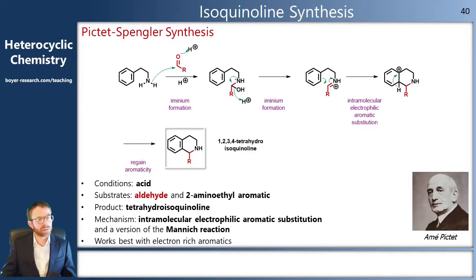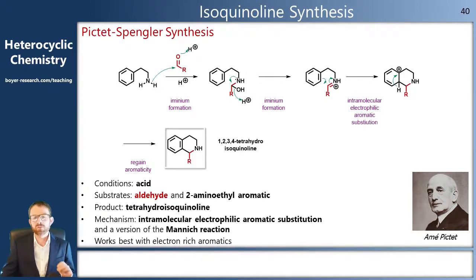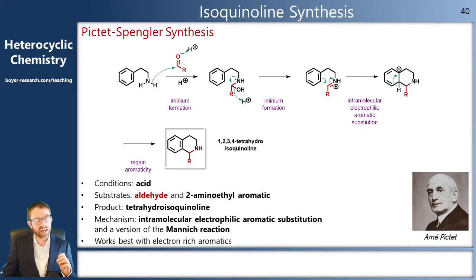In our first example, this is the Pictet-Spengler synthesis. We have an amino ethyl aromatic system and we treat that with an aldehyde under acidic conditions. Amines and aldehydes condense rapidly to form iminium species, so our nucleophilic nitrogen will attack our aldehyde, and we'll get the loss of water to form our iminium. This gives us a positively charged electrophile, which is sufficiently strong to break the aromatic system in an intramolecular electrophilic aromatic substitution.